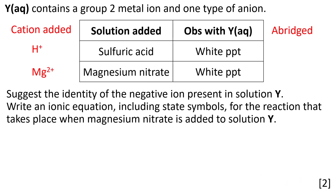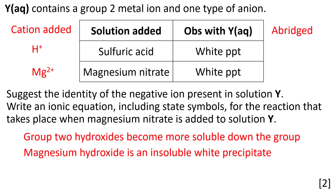The negative ion in solution Y might react with a cation that is added to form a precipitate. H+ ions, or protons, are added from the sulfuric acid. Mg2+ ions are added from the magnesium nitrate. Group 2 hydroxides become more soluble down the group — this is also studied under group 2 chemistry. Magnesium hydroxide is insoluble.